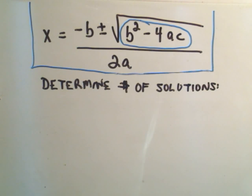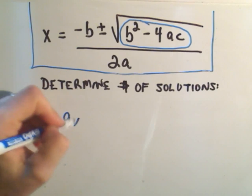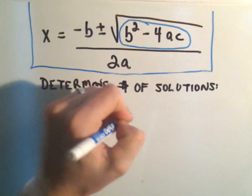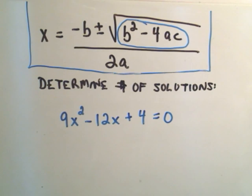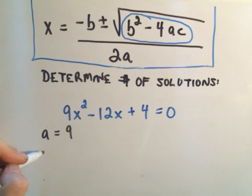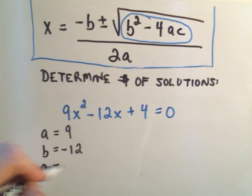So let me do at least one other one here. Suppose that I have the quadratic equation 9x squared minus 12x plus 4 equals 0. My a is going to be positive 9. My b is going to be negative 12. My c is going to be positive 4.